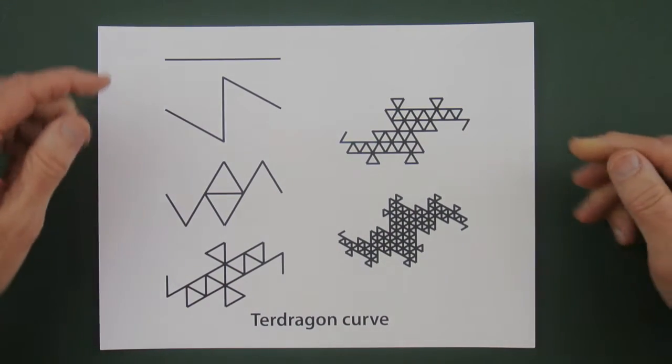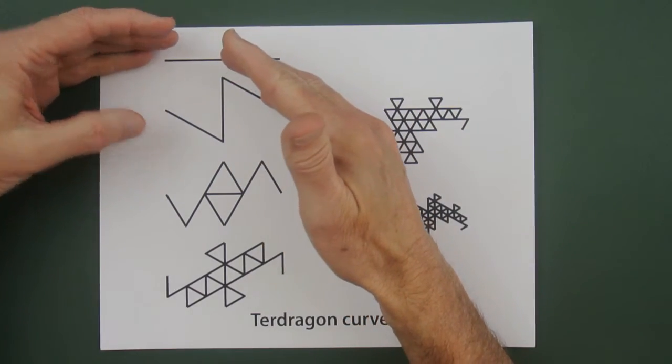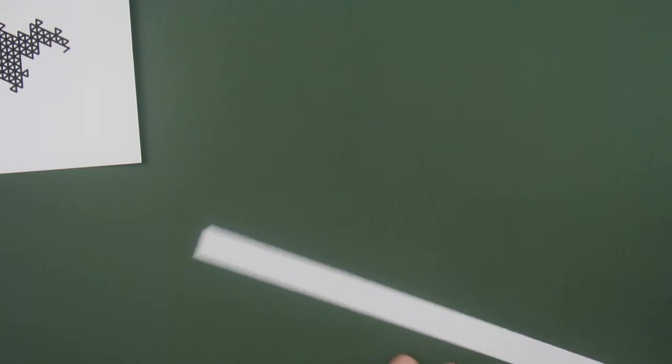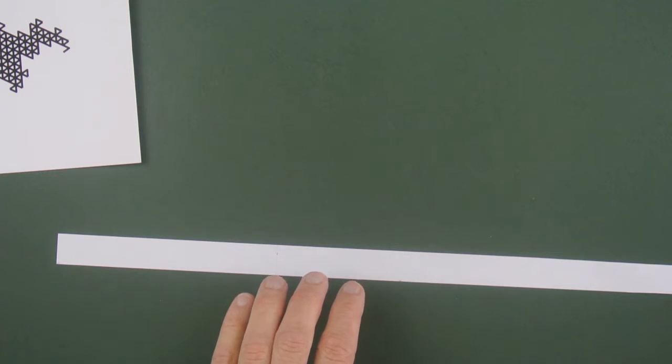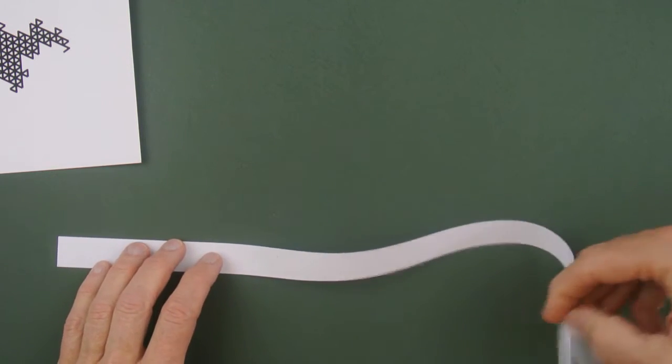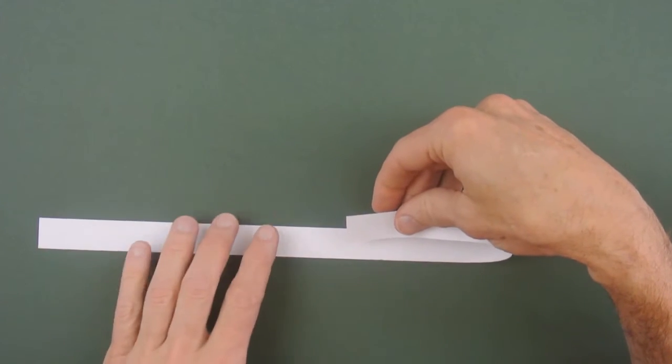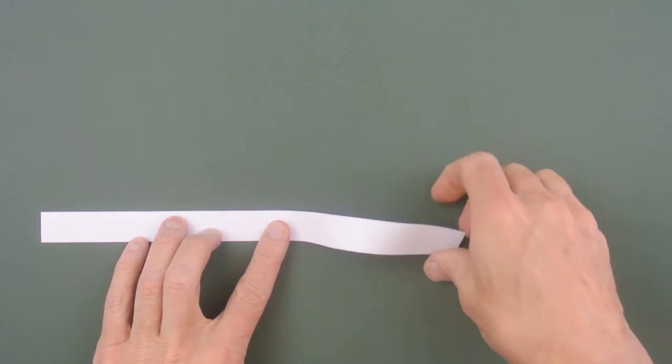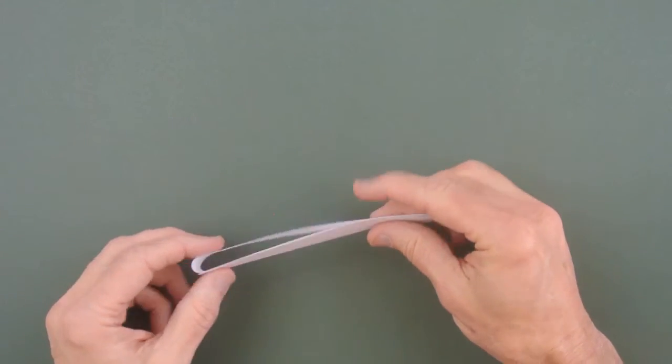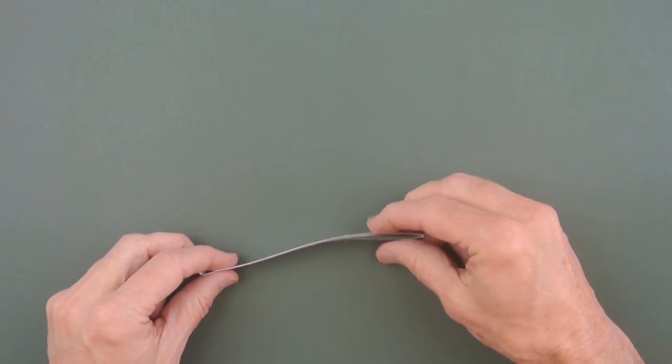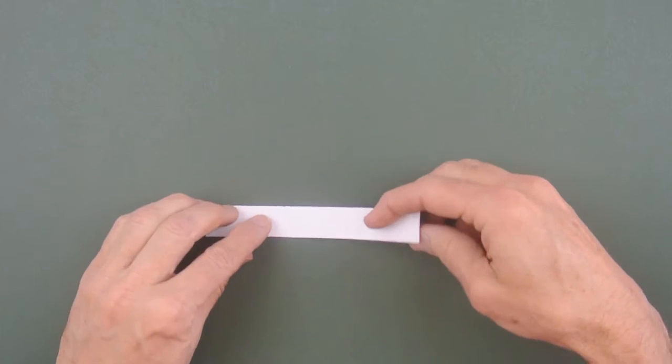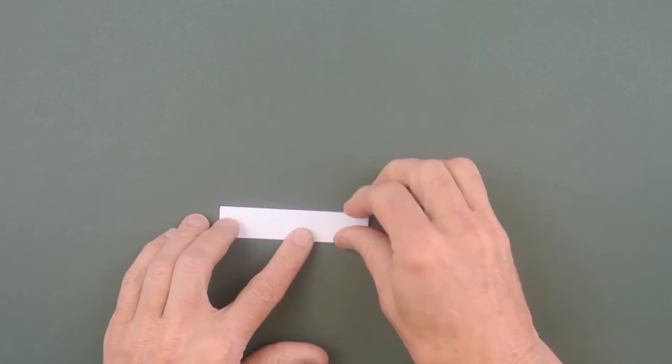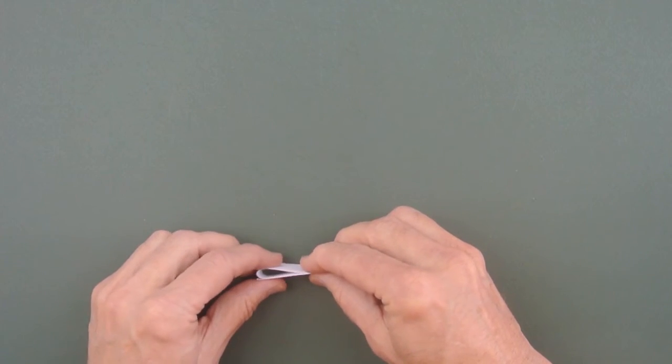So let's try the same type of folding. Let's start with our paper. Let's fold one third this way. Then the other third is going to fold that way. Again, here's a long strip. So we start like this. Now this other third has to fold backwards in this case. Like so. And we're going to iterate that.